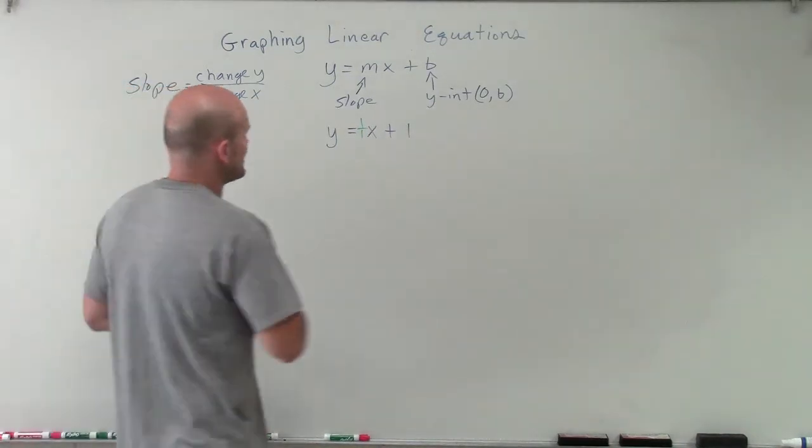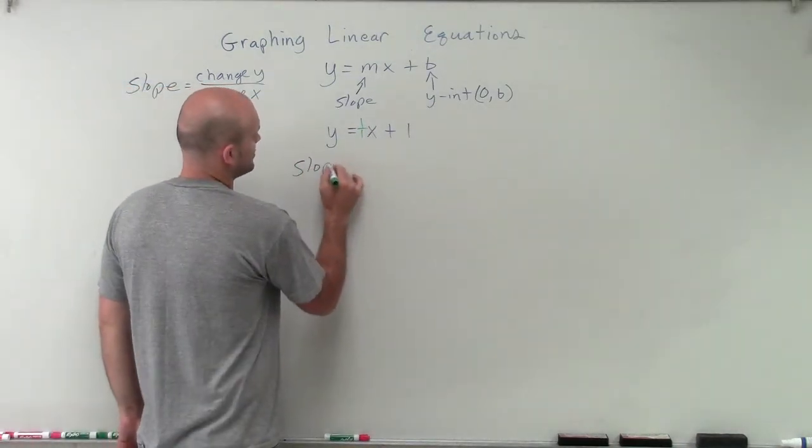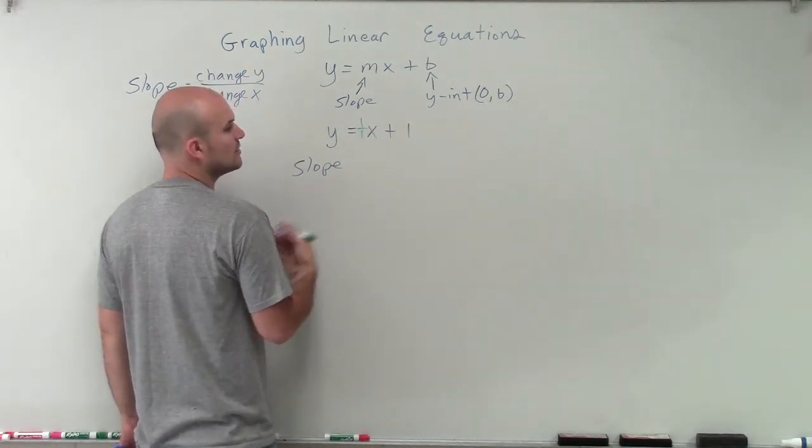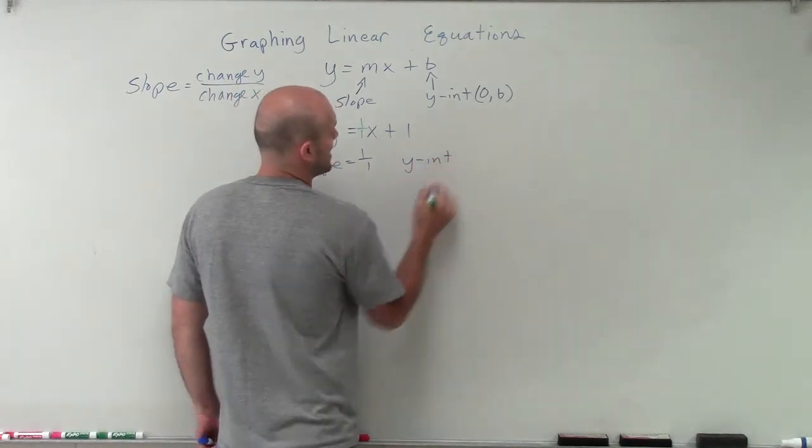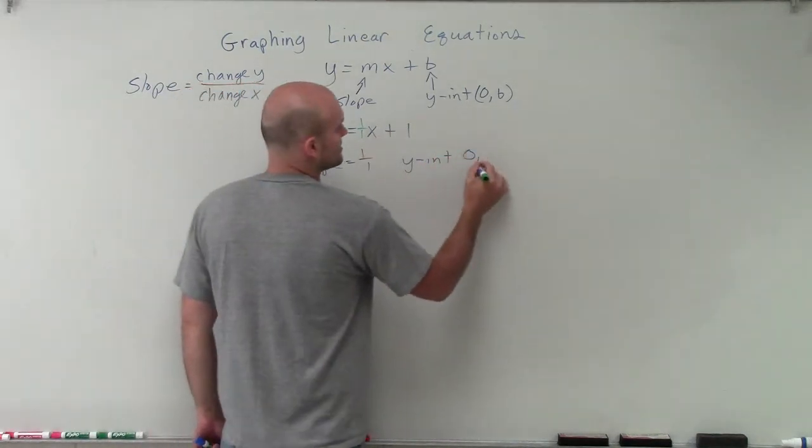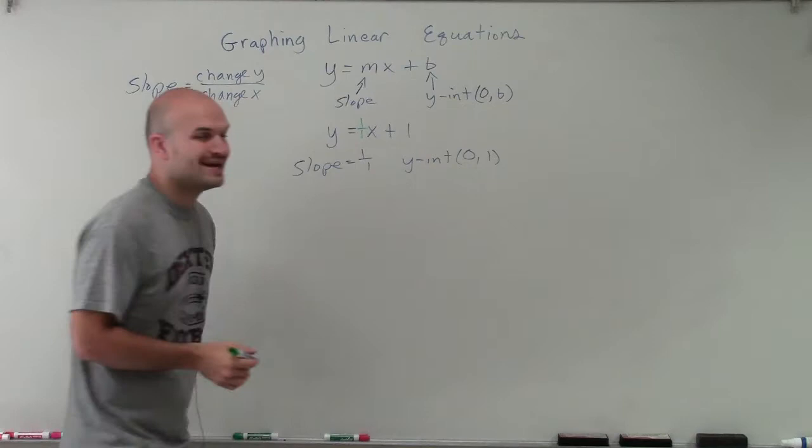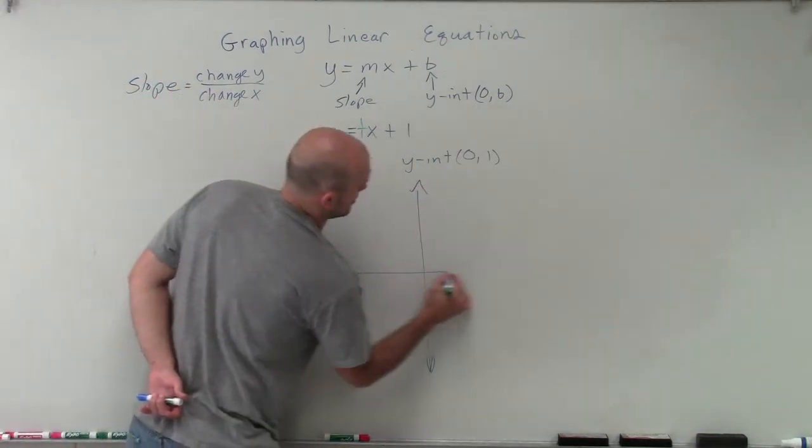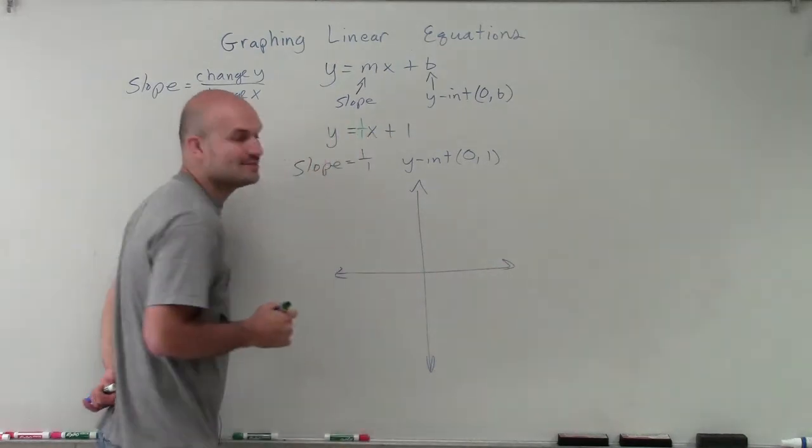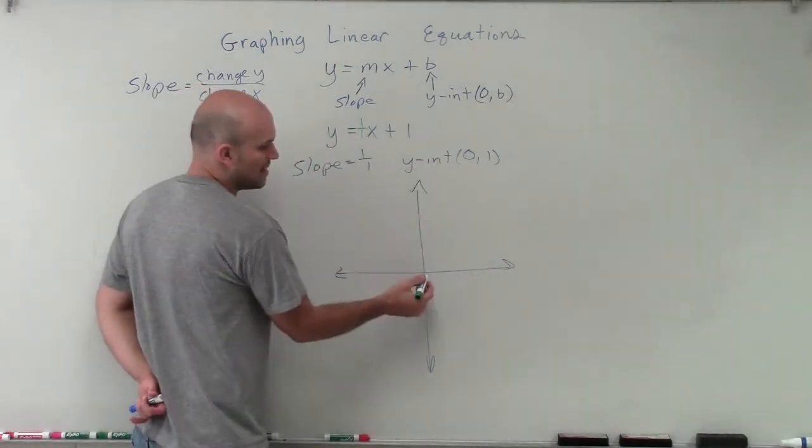All right, so now I have my slope. So what I'm going to do is I'm actually going to take this out and determine what each point is. My slope is 1 over 1. And my y-intercept is the coordinate point 0, 1. So when I'm graphing this, I know that's going to be the first point I'm going to plot.